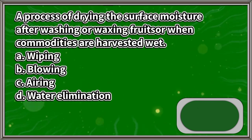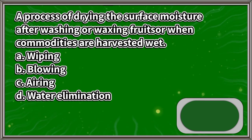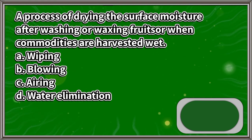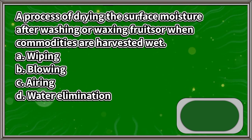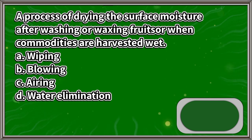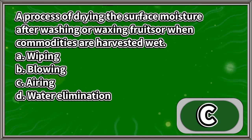A process of drying the surface moisture after washing or waxing fruits, or when commodities are harvested wet: A. Wiping, B. Blowing, C. Airing, D. Water elimination. The answer is letter C.